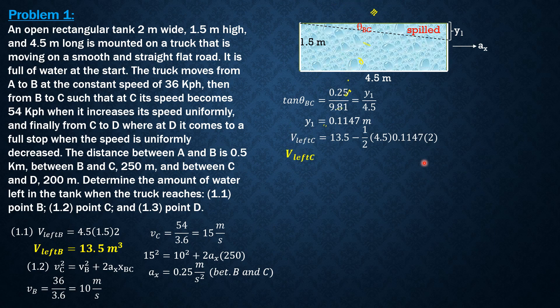Then for the third question, between C and D, the final speed is 0, so v_D^2 = v_C^2 + 2a_x(x_CD), where x_CD is 200.